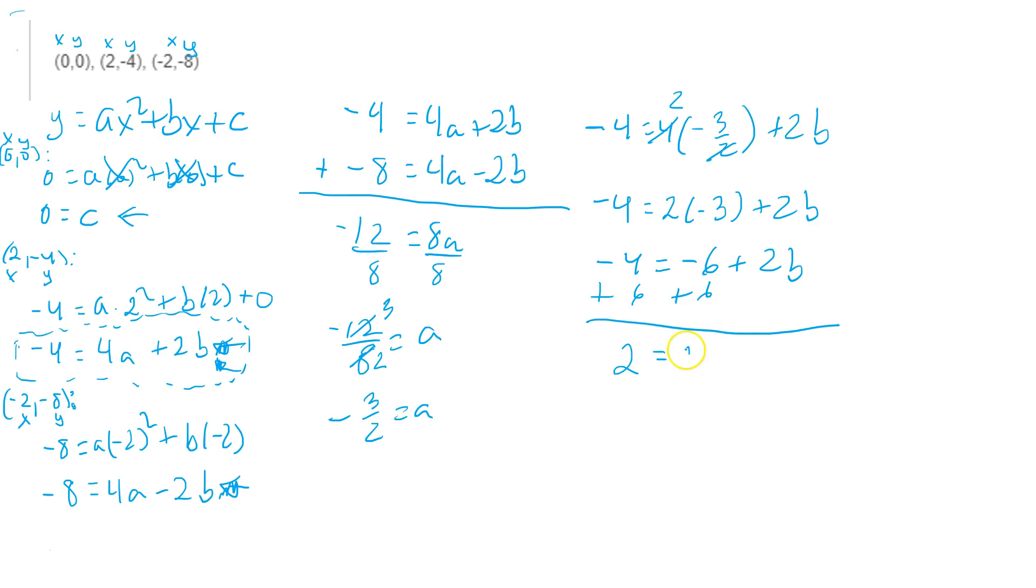On the right side, you will have 2b. Lastly, you divide both sides by 2. And therefore, b has the value 1.